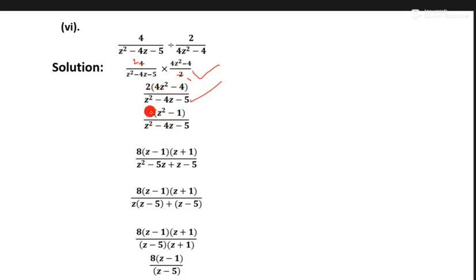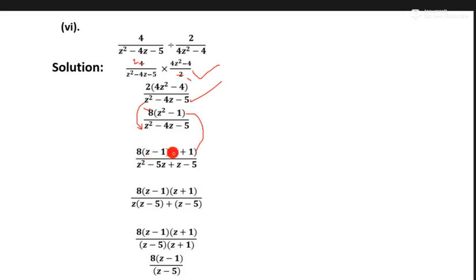We take 4 common from both these terms and multiply 4 into 8, giving 4 × 2 = 8. So z square minus 1 same as it is. This part we open using the a square minus b square formula as z minus 1 and z plus 1. In the next fraction part, we break 4 into 5z plus z to make its factors.